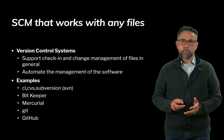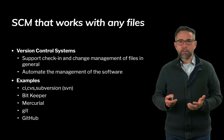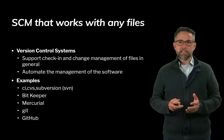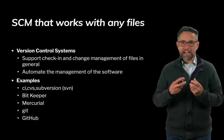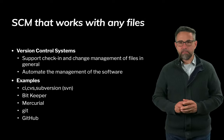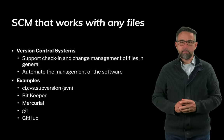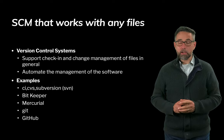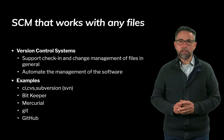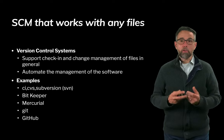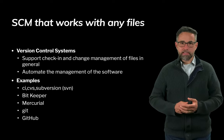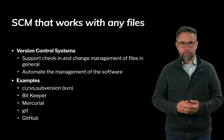Software change management can work with any files but is largely used to track software. Version control systems support checking in files and managing changes, automating the management process. Examples include CI, CVS, SVN (short for Subversion), Bitkeeper, Mercurial, and Git — and the web-based service GitHub that supports it.